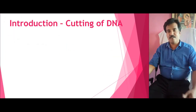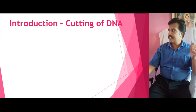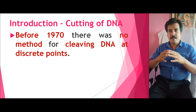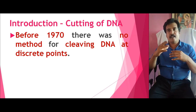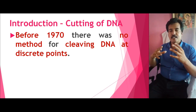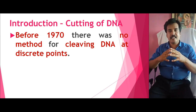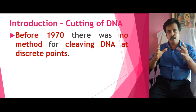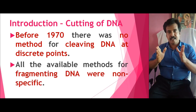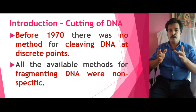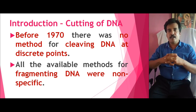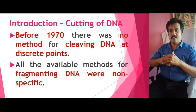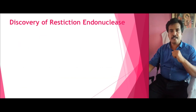Before 1970, there were no methods available for precisely cutting DNA at the location where we actually want to cut. The available methods at that time were generally physical means for cutting DNA. The issue with this method is that it does not precisely cut the DNA where we need a particular gene — it sometimes cuts DNA at a non-specific location in between genes, so we were not able to get the gene of interest.